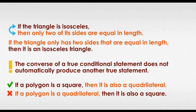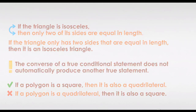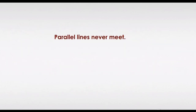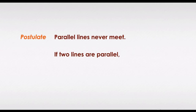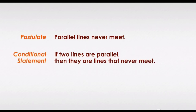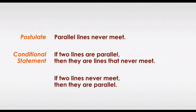Many times in geometry we see postulates — statements that are assumed to be true — and theorems — statements able to be proved — that can become conditional statements and converse conditional statements. Parallel lines never meet. Postulate. If two lines are parallel, then they are lines that never meet. Conditional statement. If two lines never meet, then they are parallel. Converse.